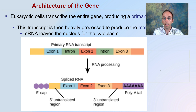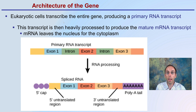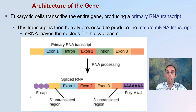The architecture of the gene — again speaking for eukaryotic cells — they transcribe the entire gene, producing a primary RNA transcript. This transcript is then heavily processed to produce a mature messenger RNA transcript. The mRNA leaves the nucleus for the cytoplasm. So our primary RNA transcript has the exons and the introns. RNA processing then occurs, splicing out those introns, and only the exons will be left in the final messenger RNA. A 5' cap and a poly-A tail are also added after it's spliced.